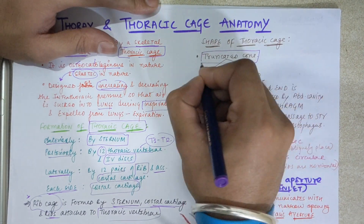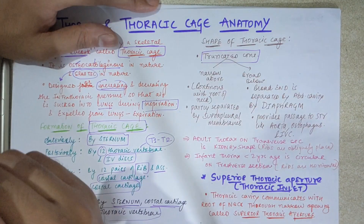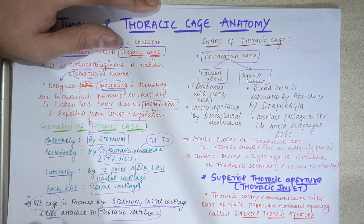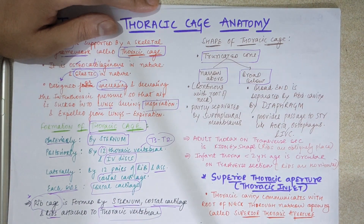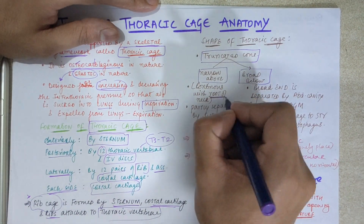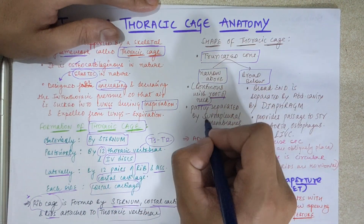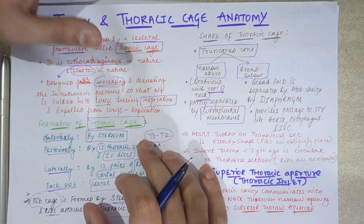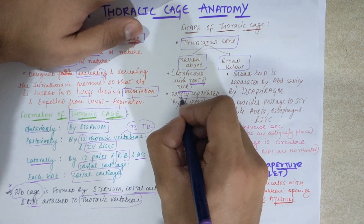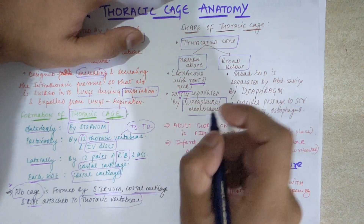The thoracic cage and rib cage refer to the same thing. Now, the shape — how do we observe it? It is a truncated cone. The upper part is narrow and the lower/bottom part is broad. The narrow upper part communicates with the root of the neck and is separated by the suprapleural membrane.